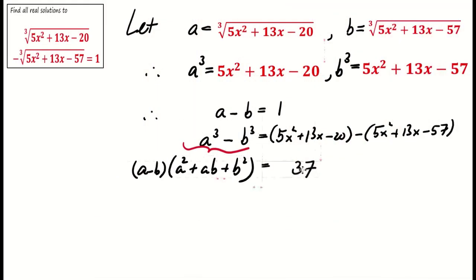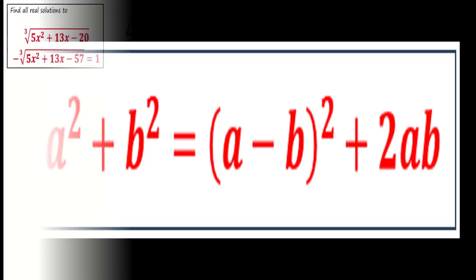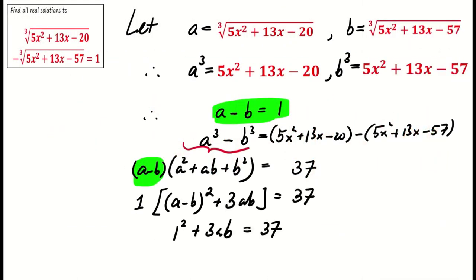and the condition a - b = 1, we obtain the following. Note that a² + b² = (a - b)² + 2ab, so after some calculation, ab = 12.